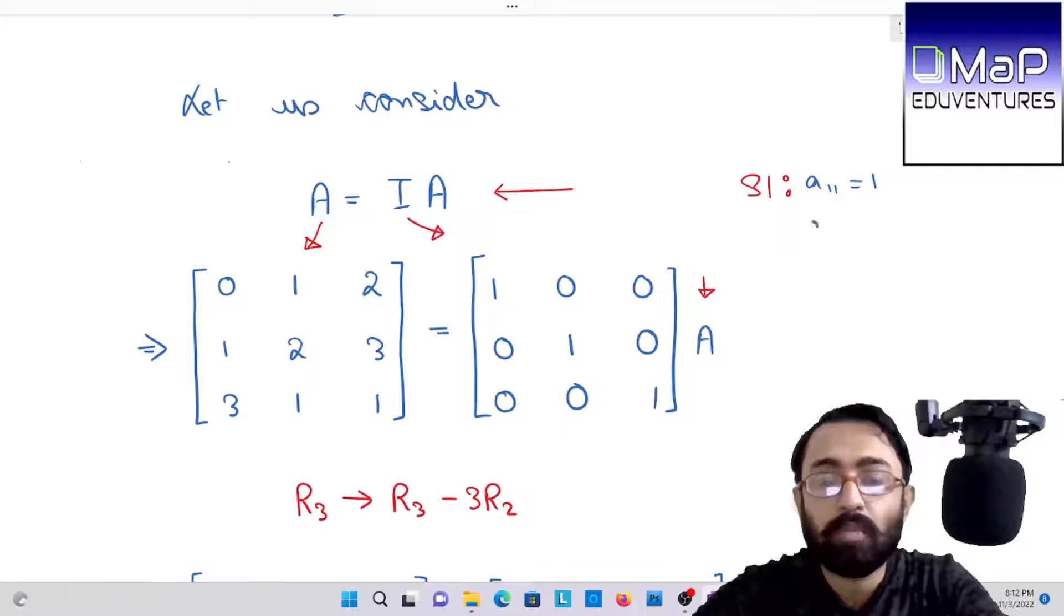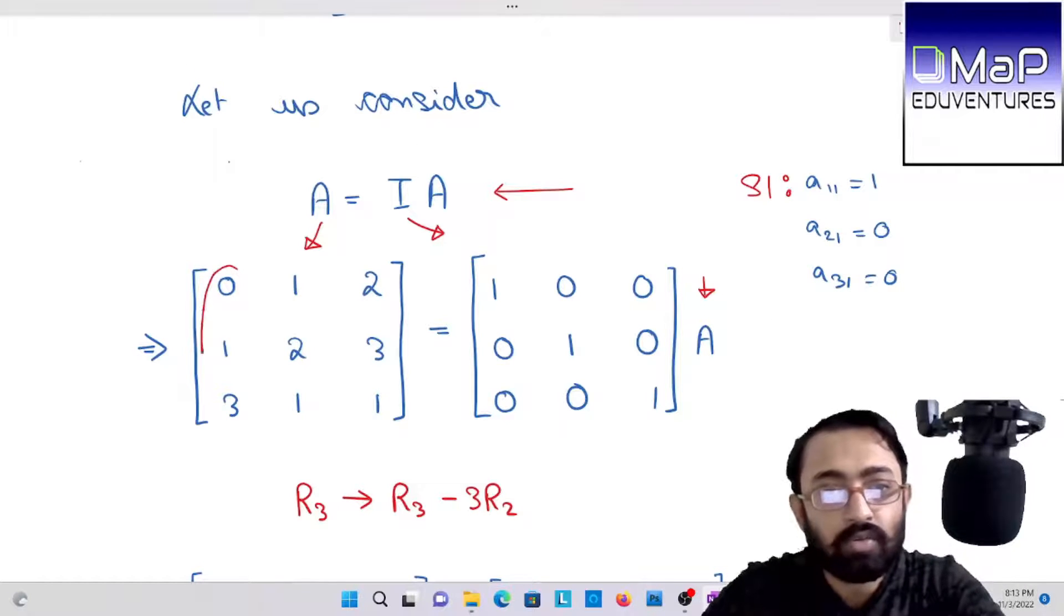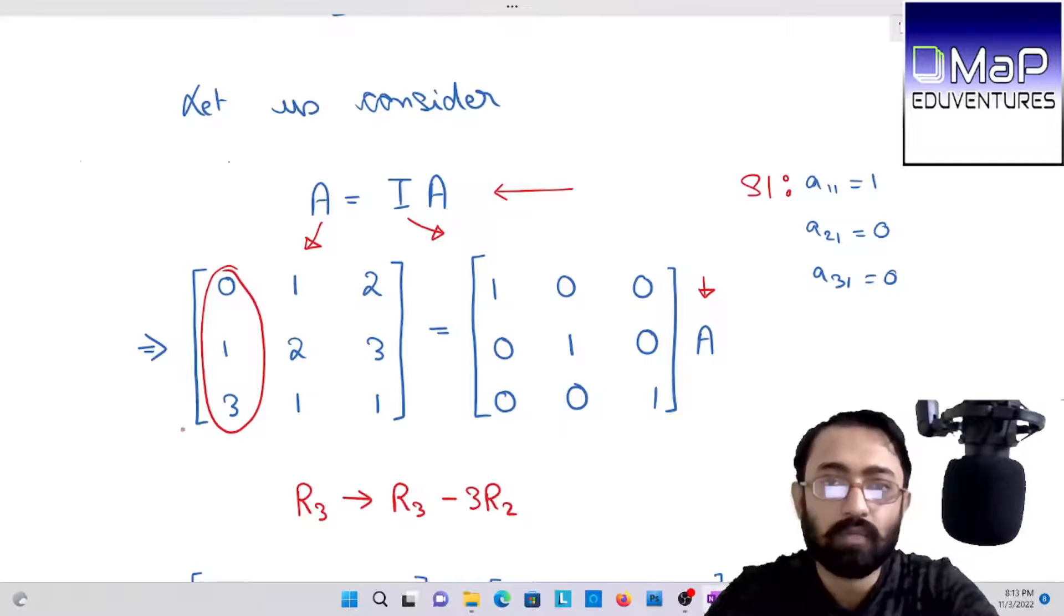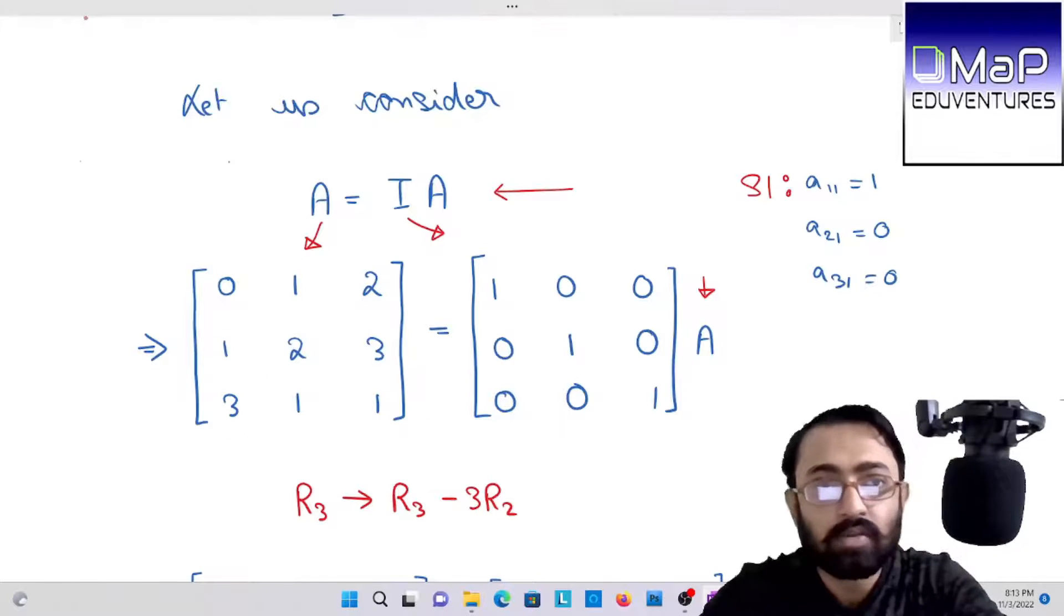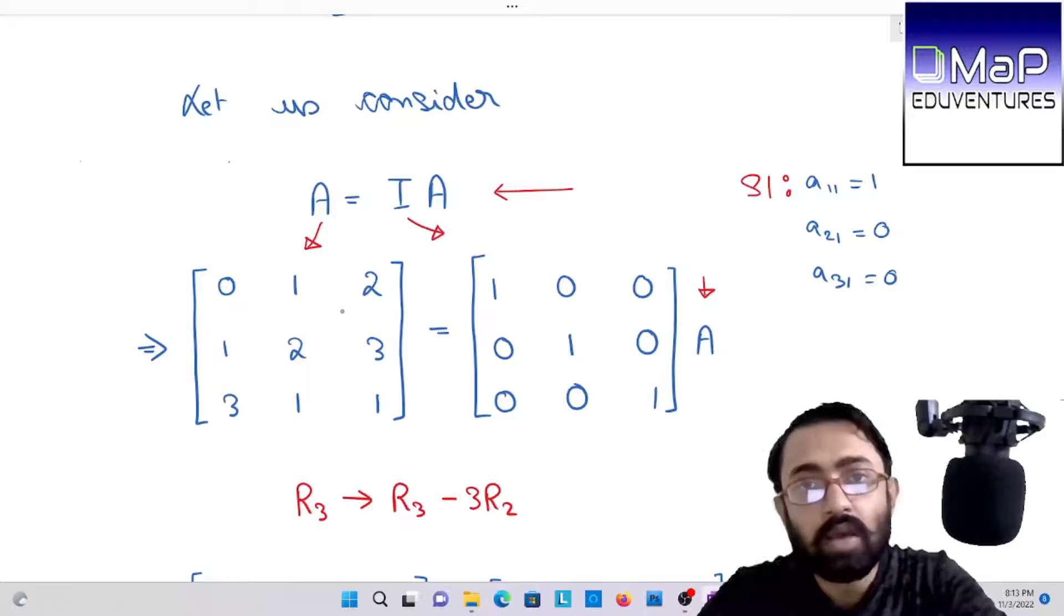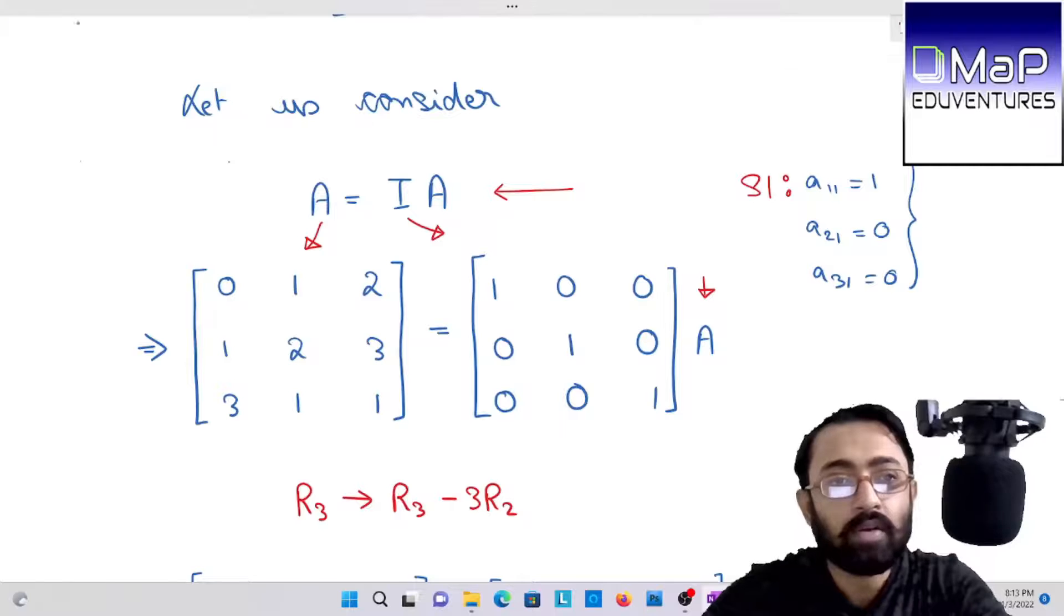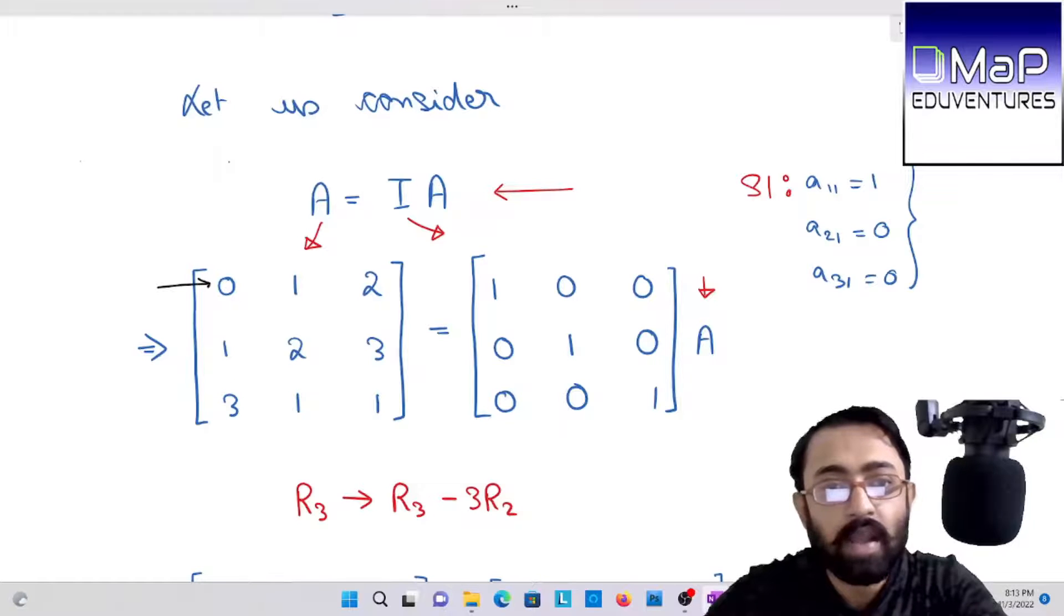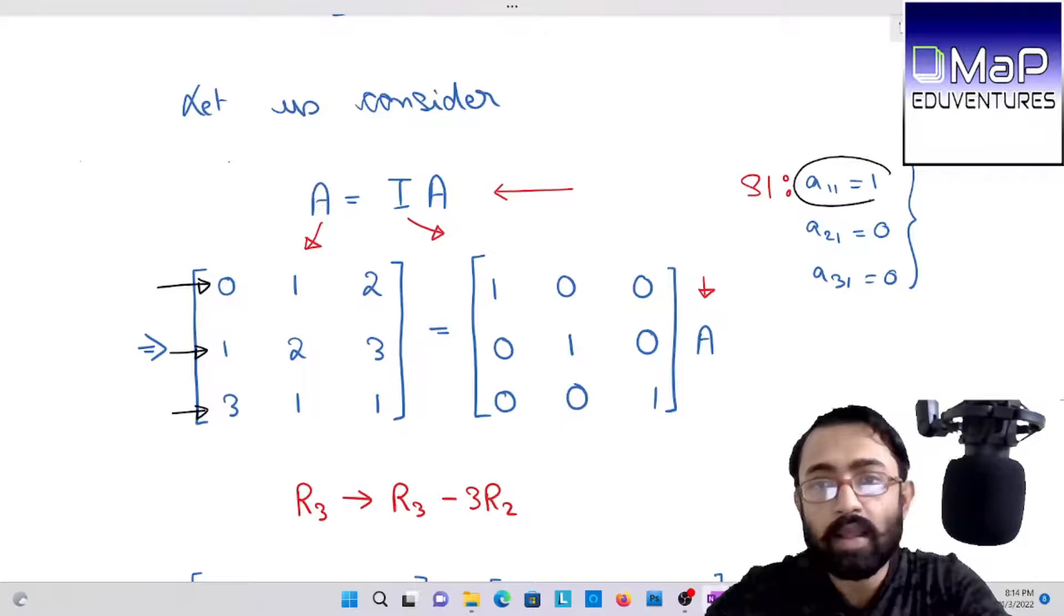Our step one is to make A11 equals to one, and with its help to make A21 equals to zero and A31 equals to zero. I am trying to make the first column look similar with the identity matrix. Now A11 in the place of A11, I already have zero. A21 has one and A31 has three. Now A11 I need one, but no problem, I have one at A21, so I will interchange.